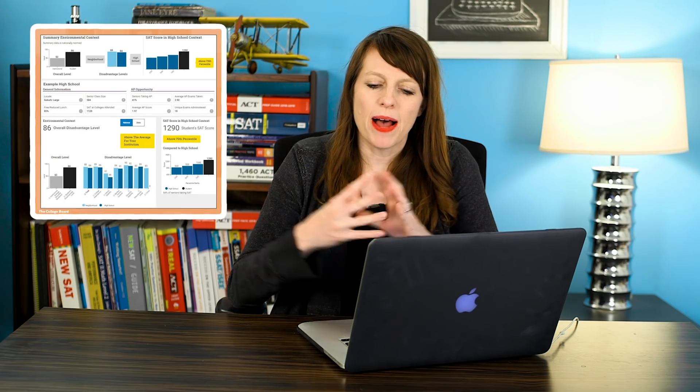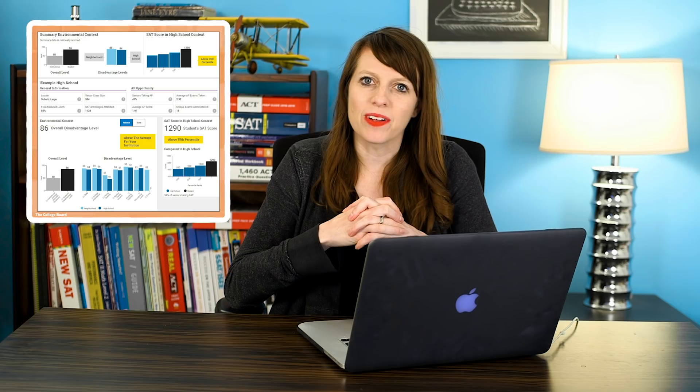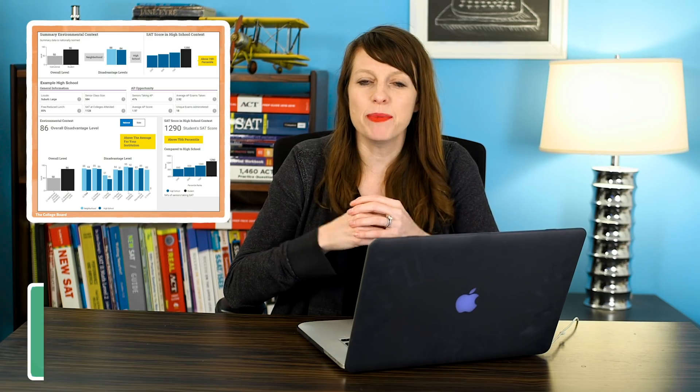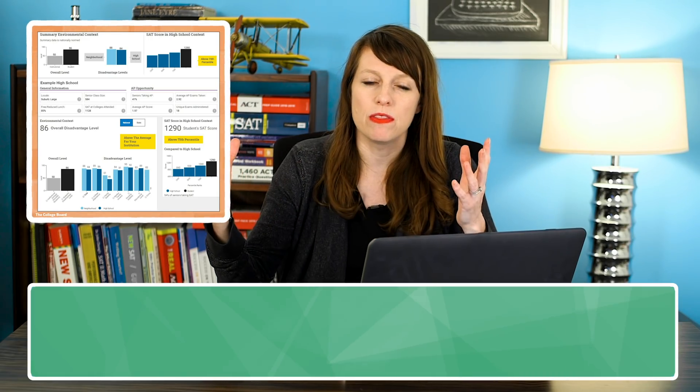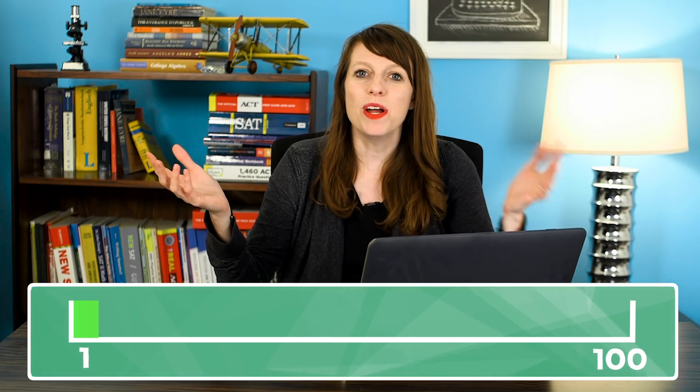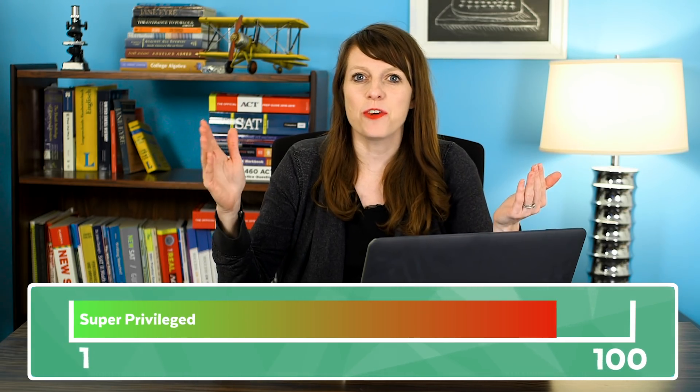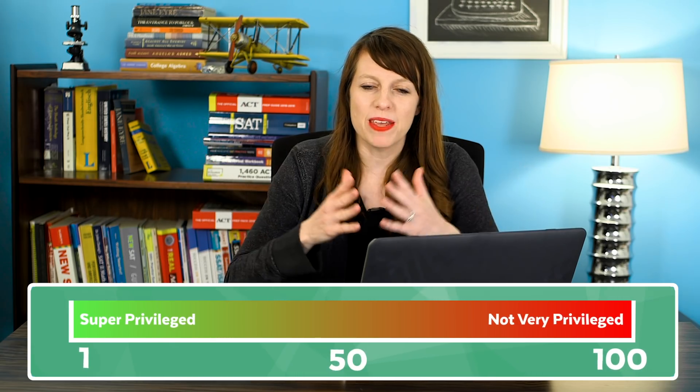Let's talk College Board Adversity Index. When colleges log in to see your information or look at your SAT score, it pops up in a window called an Environmental Context Dashboard that tells them a score on a scale of 1 to 100 of how privileged you are — essentially. One being super privileged and 100 being not so privileged, and 50 being kind of in the middle.